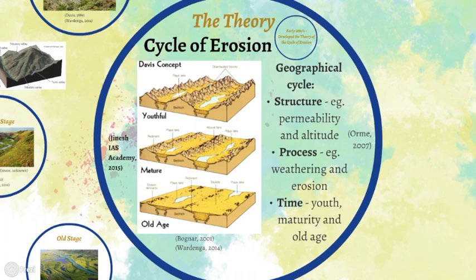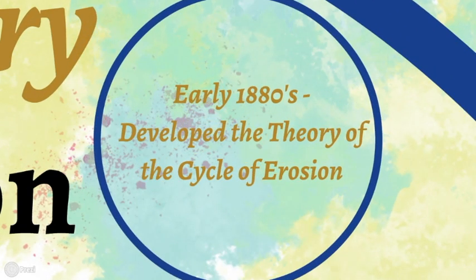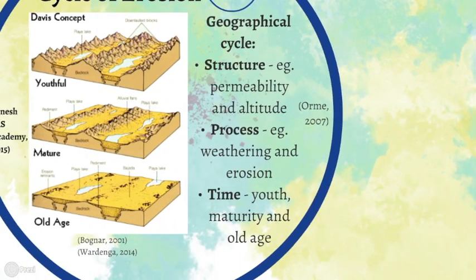At the beginning of the 1880s, Davis developed a model of terrestrial planation known as the cycle of erosion, which states that landforms follow a systematic cycle of development, moving from youth to maturity to old age, with each stage having its own characteristics. Furthermore, the geographic cycle is a function of three significant factors: structure, process, and time.